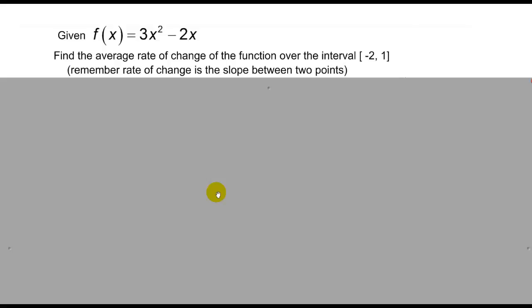So this problem is a little bit different in that we're asked to find the average rate of change or as we've been talking about the slope. This guy right here is the slope of a function, not of a line, but of a function over a specific interval. And remember our rate of change is the slope between two points. Now the problem is we don't have two points.